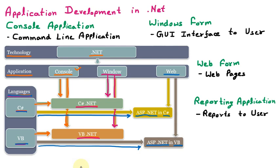To summarize the major application types in .NET: Console Application is for command-line interface work with no GUI, similar to C and C++. Windows Application is for creating projects with GUI forms running on your system. Web Application or Web Form is for creating projects that work on a website. Reporting Application is for generating bar graphs, pie charts, and other reports for the user. These are all the application development types in .NET.